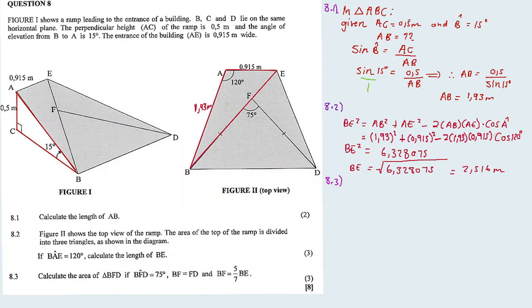So 8.3: Calculate the area of triangle BFD if angle BFD is 75 degrees and BF equals FD. In this case, we cannot use half base times height.